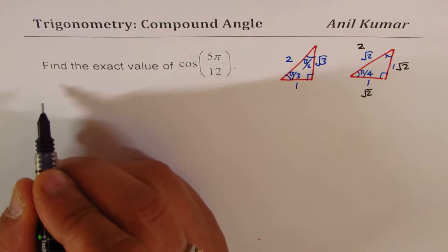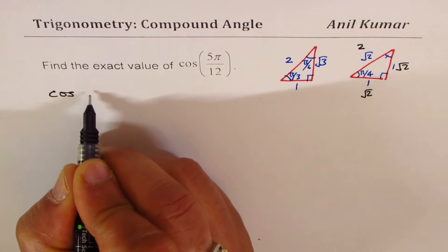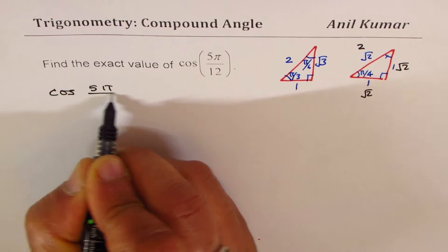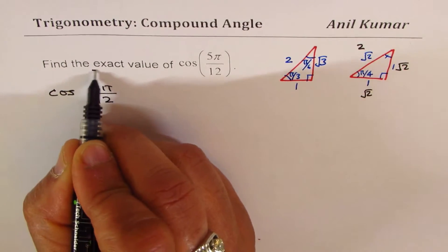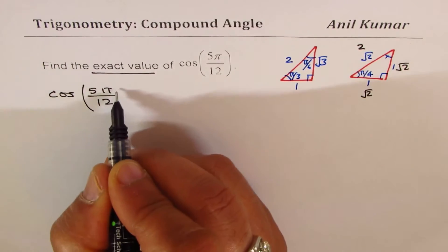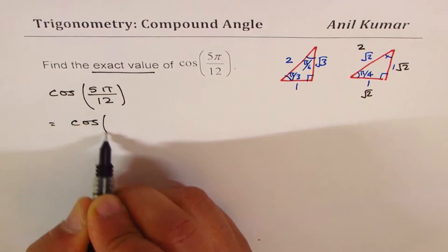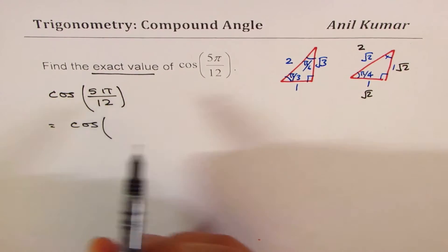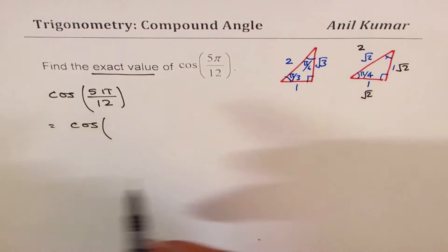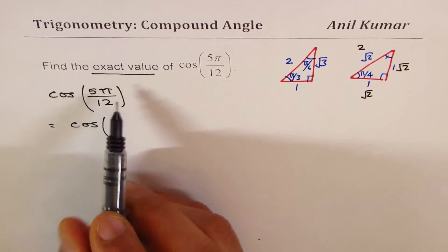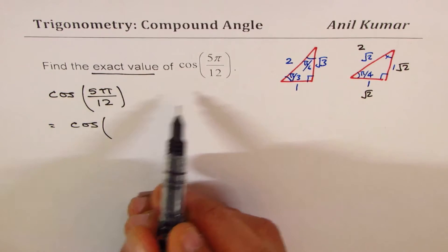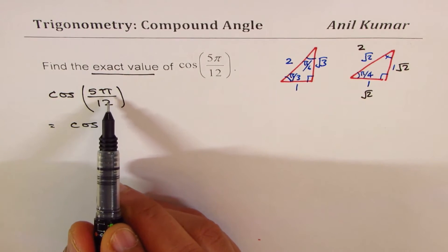Now we have cos(5π/12). We need to find the exact value, that means we have to split this number 5π in such a way that we get a combination of these angles. Some of you can convert to degrees if you are more familiar with that, but I prefer to work with radians.